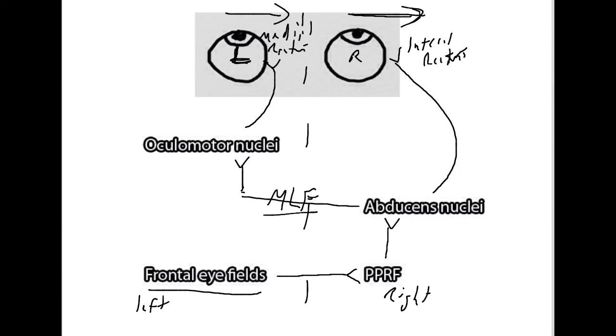We'll start off by talking about seizures. And so, seizures, if they originate in the frontal lobes, can cause eye deviation to the contralateral side. And why does that make sense? Because if we have a seizure that starts off in the left frontal lobe, it's going to activate the frontal eye fields of that lobe, which is going to send information to the PPRF on the right, to the abducens nuclei on the right, which is going to cause the right lateral rectus to look to the right and the left via the MLF eye to look to the right as well via the medial rectus muscle.